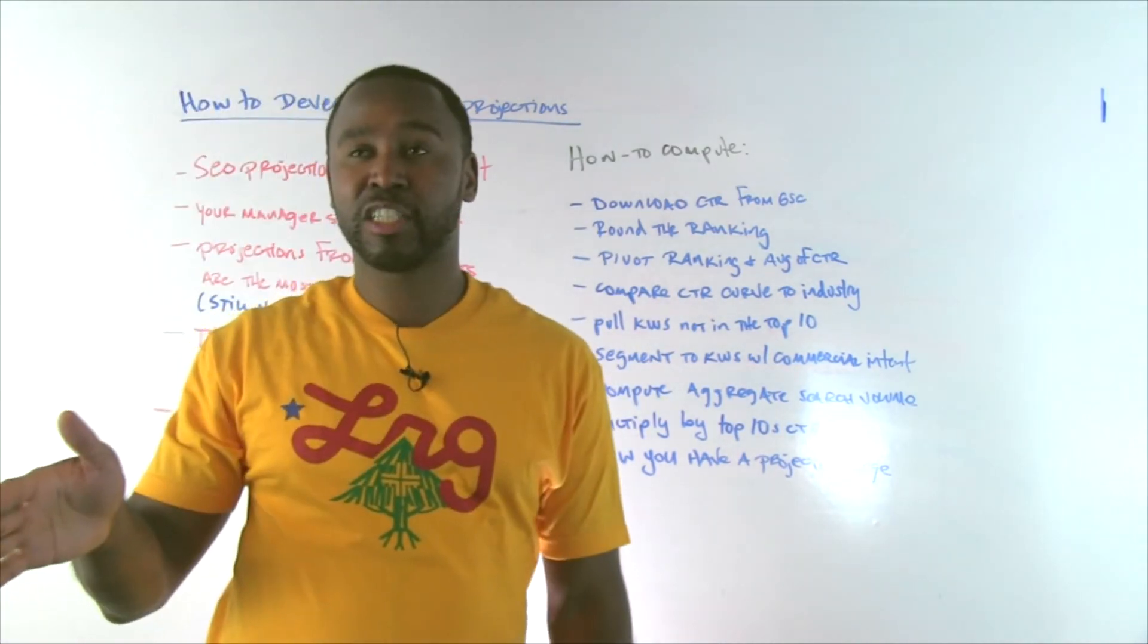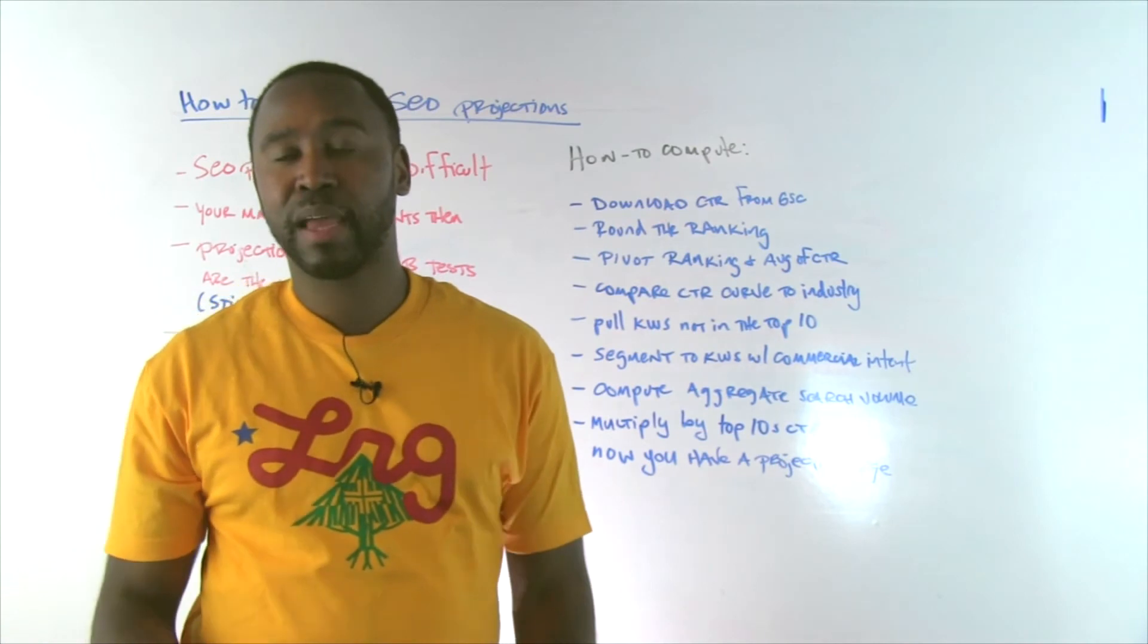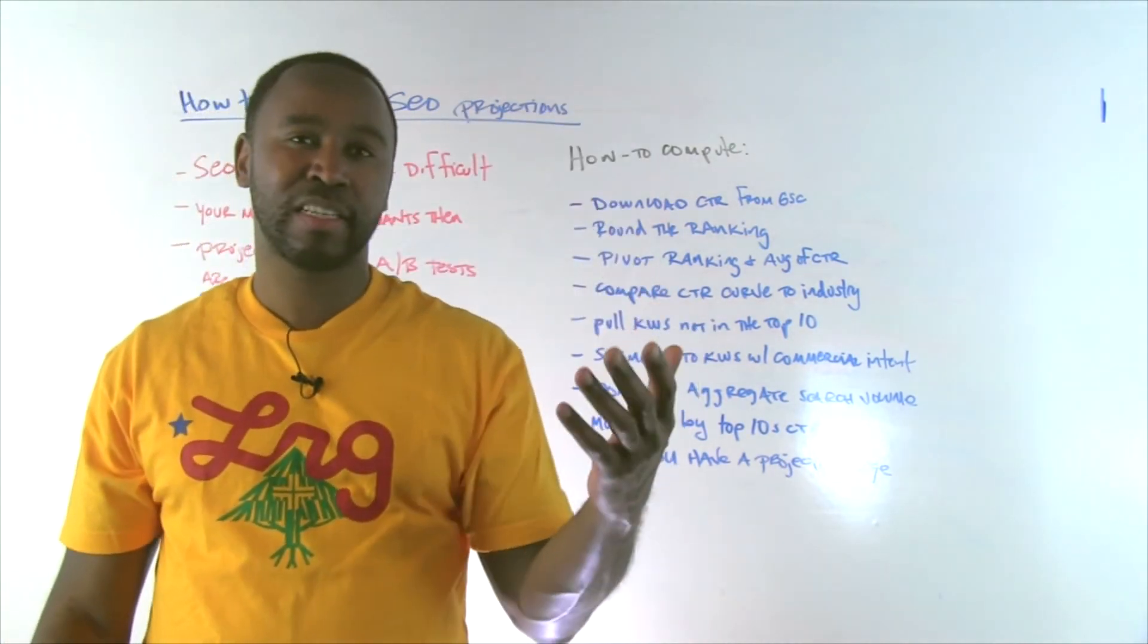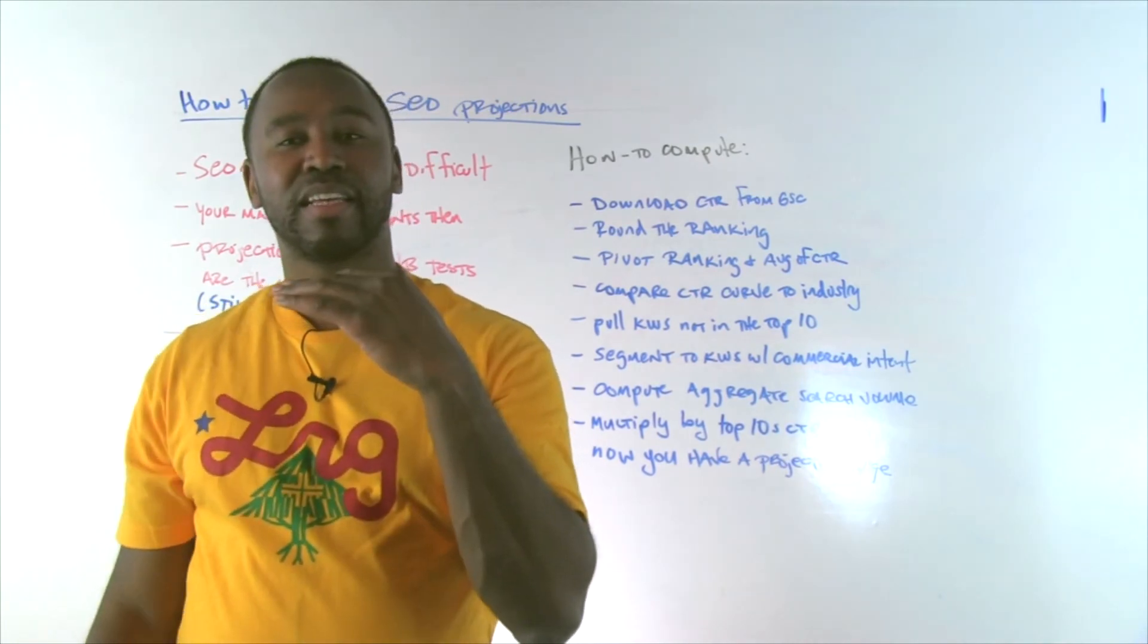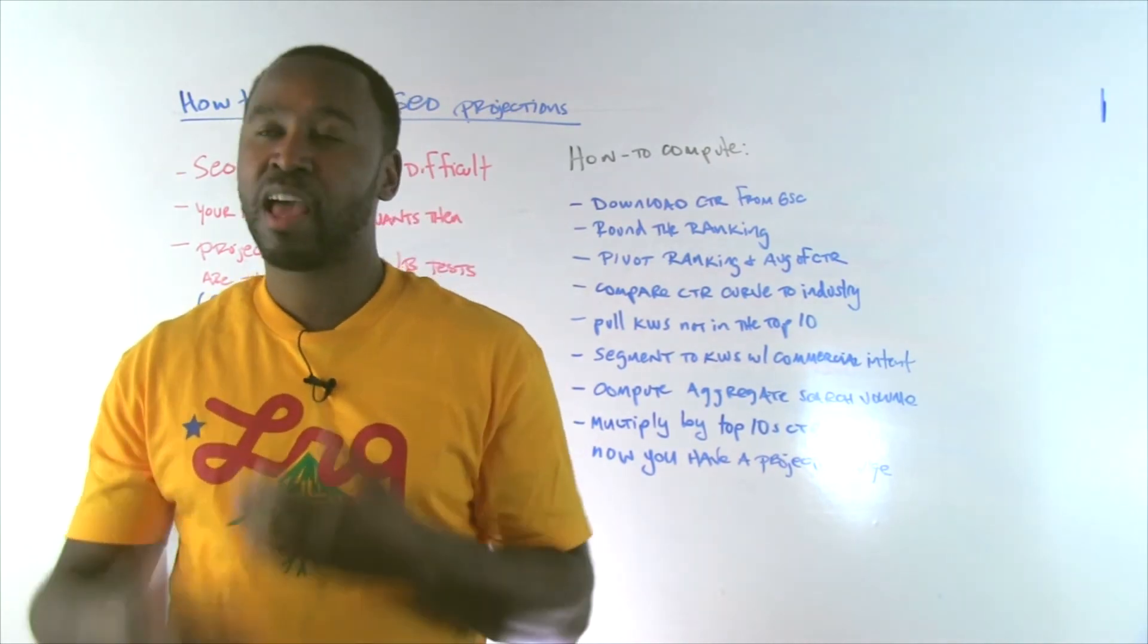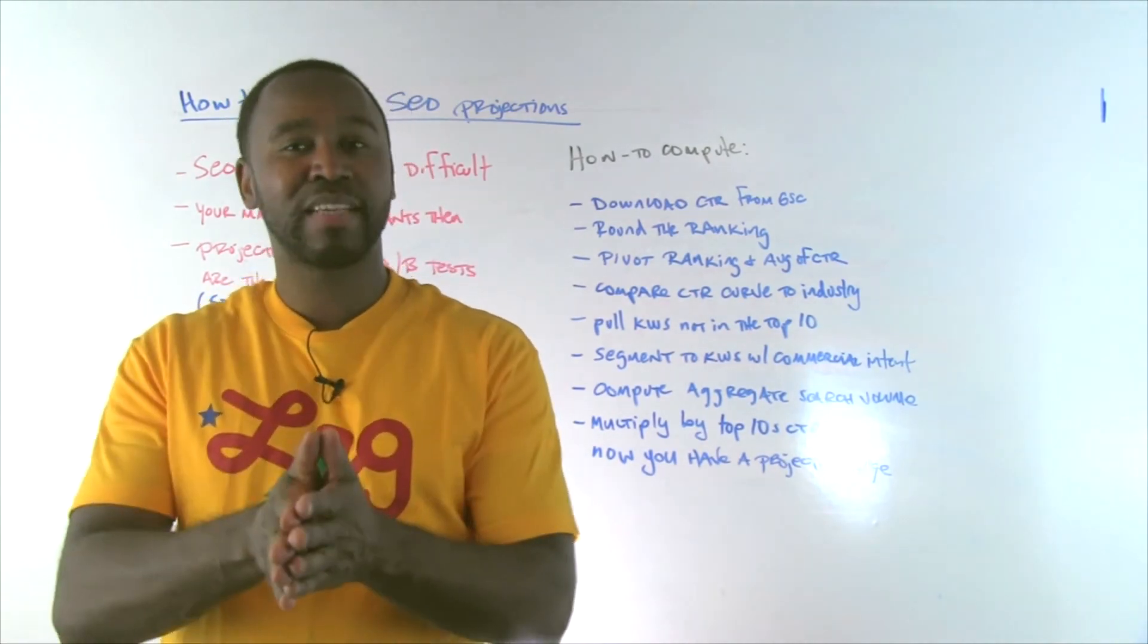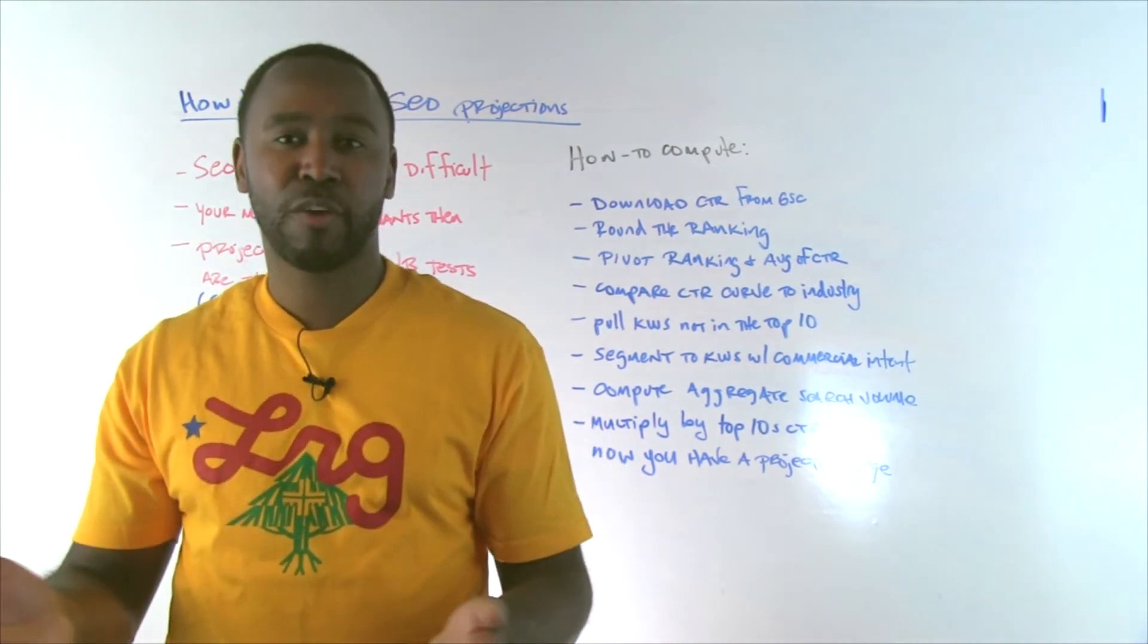So based on getting every keyword in the top 10, you have a number which is X. Everything to the number one position, you have a number which is Y. So that is now your projected range.